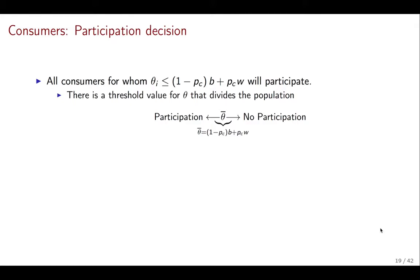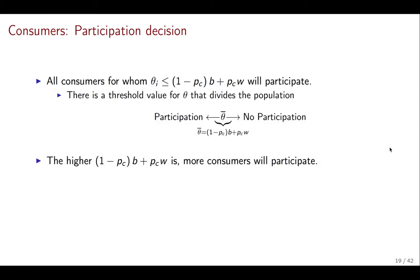The decision is quite straightforward. All consumers whose expected value of joining the labor force is greater than their valuation of staying out will participate, and all consumers for whom this doesn't hold will not participate. If you think of all the different thetas, there is a threshold value theta_bar, such that if your theta_i is higher than theta_bar, your individual valuation exceeds the value of joining and you won't join. But if your value of staying at home is lower than the value of participation, then you will want to join. From here, we already know some of the comparative statics of the model.